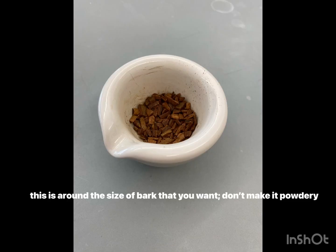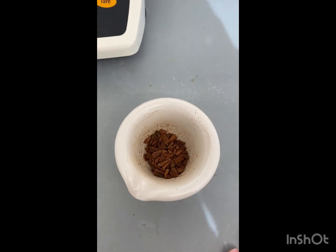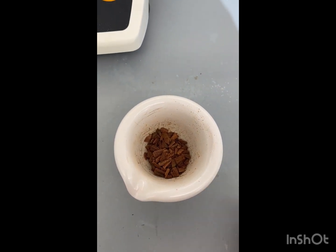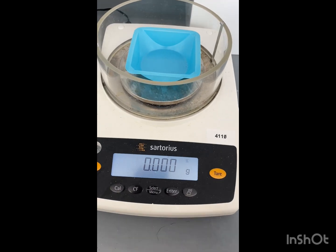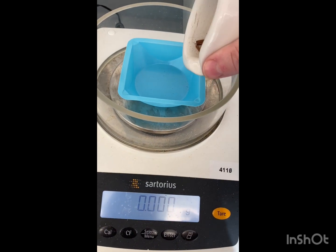First you want to get your mortar and pestle and you want to grind it up as best you can. We're going to weigh out about 5 grams. Now that we have our cinnamon crushed, we're going to add it to our weigh boat. And we want around 5 grams.